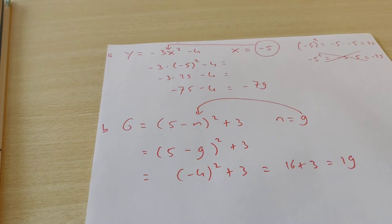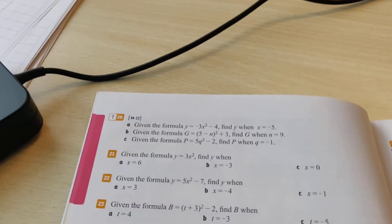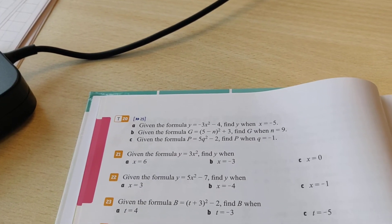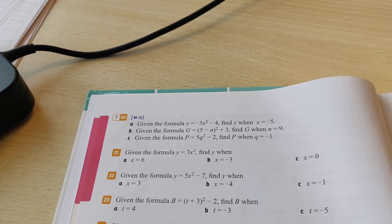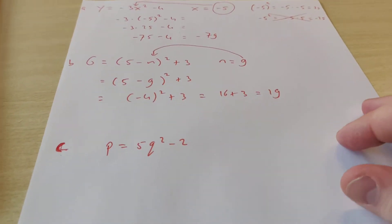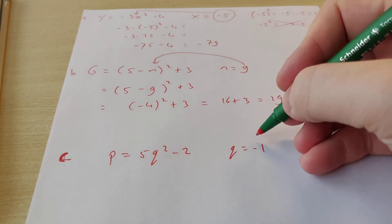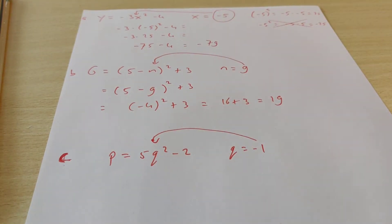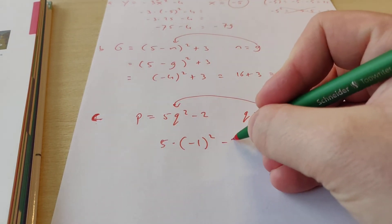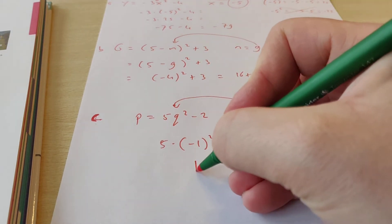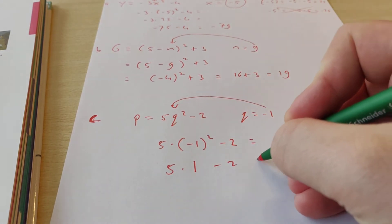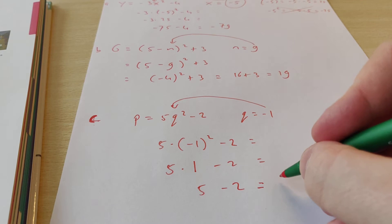Underneath here I'm going to write down exercise C. It says given is the formula P equals 5Q squared minus 2, and we need to find P when Q is minus 1. So I wrote the formula down, and Q equals minus 1, so the minus 1 goes in there. Because it's negative, we have to put it in brackets. So I get 5 times, in brackets, minus 1 squared, and then minus 2. Minus 1 times minus 1 is just 1, so 5 times 1 minus 2 equals 3.